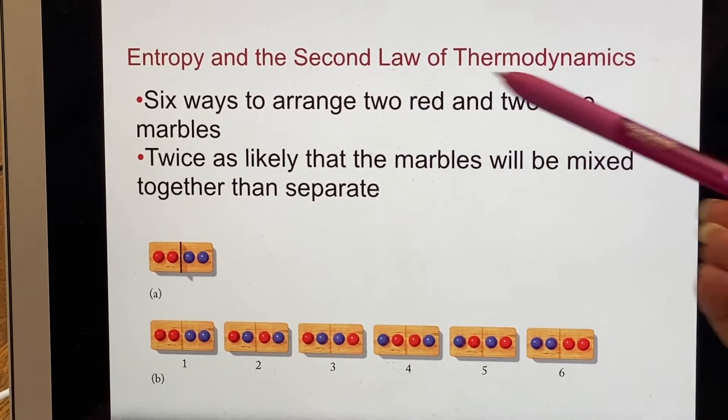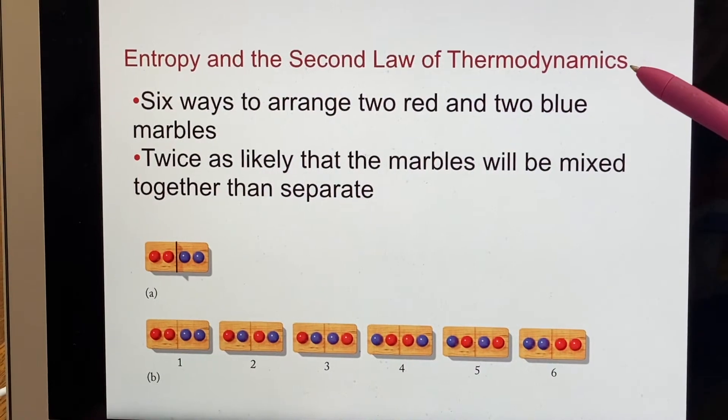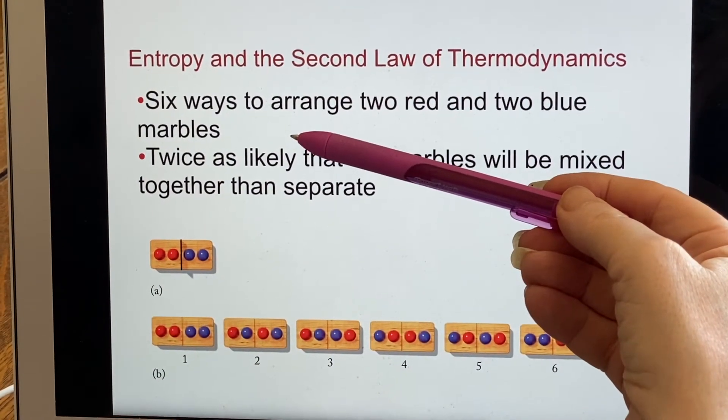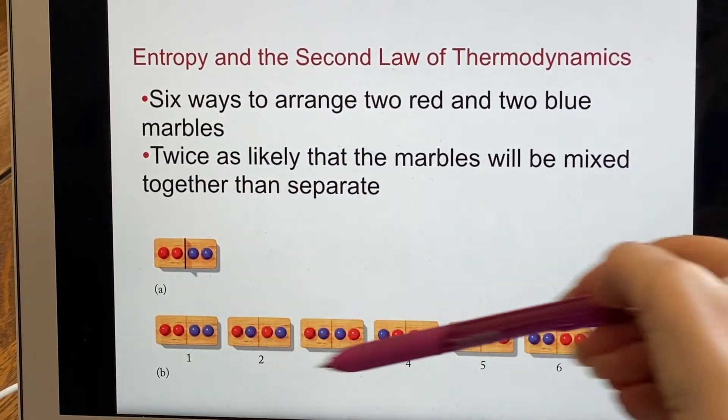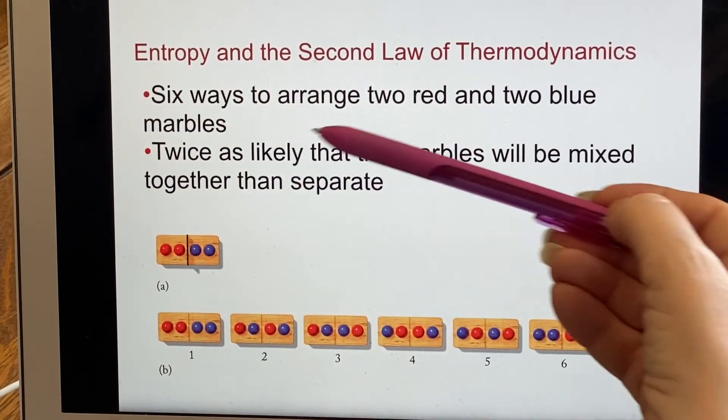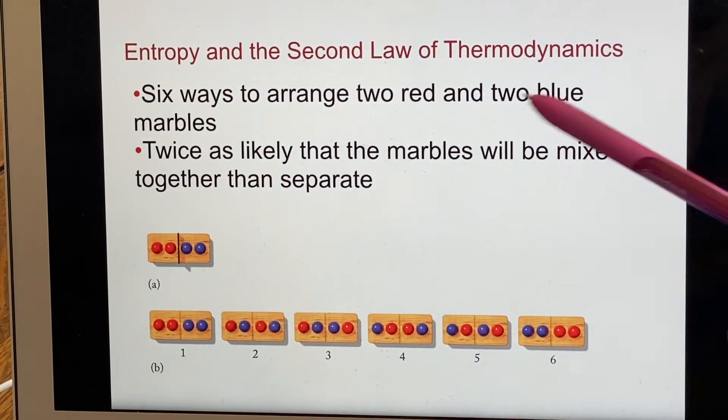Here we have entropy and the second law of thermodynamics. If we're talking about mixing, we can start moving things around. We could start analyzing things like this. There are six ways that you could arrange two red and two blue marbles.